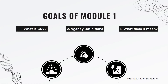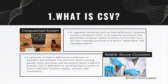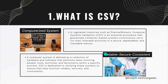Here are three goals of our session. Number one, we are going to look at what is computer system validation. Number two, we are going to look at different agency definitions, and I'm going to explain what those definitions mean so that you clearly understand what computer system validation really is. Let's get started with goal number one: what is computer system validation?